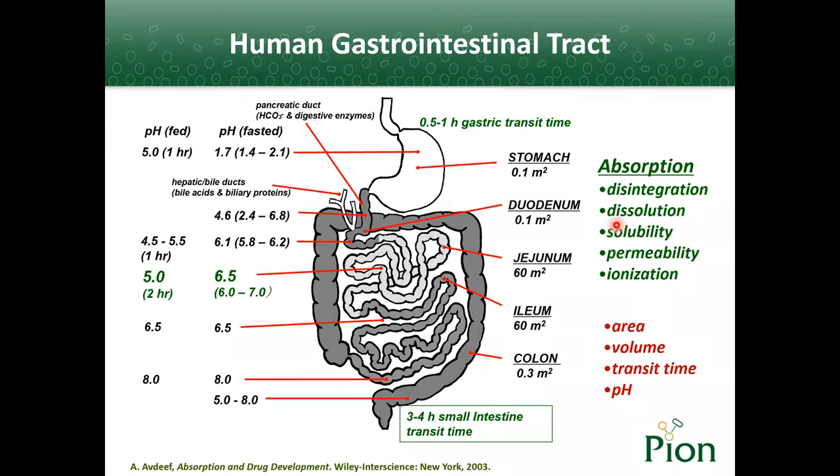This is the human gastrointestinal tract. We can see the pH is different at different locations, as well as when we are in fasted or fed state. Most absorption occurs in jejunum and ileum since absorption membrane area, volume, and transition time is much longer. So how can we better take dissolution, solubility, and permeability into consideration for absorption?